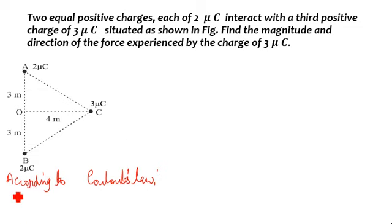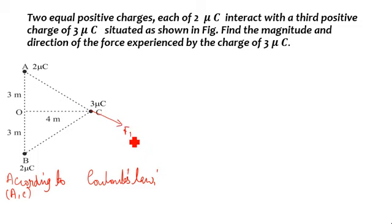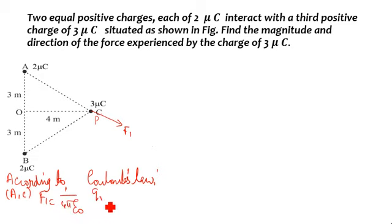Now for A and C, we have a force. A and C is a positive charge, so we have a force in that direction. Who is F1? According to Coulomb's law, for the A and C points and A charge, F1 equals 1 divided by 4πε₀, multiplied by Q1·Q2 divided by the distance squared. Then we know AC squared equals OA squared plus OC squared.